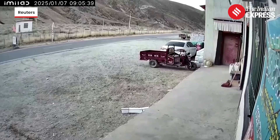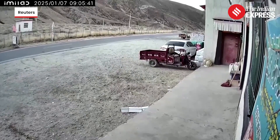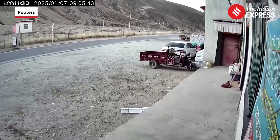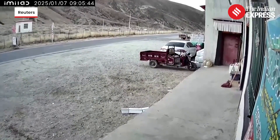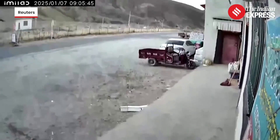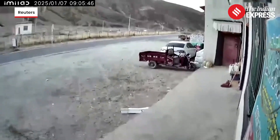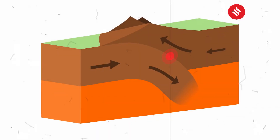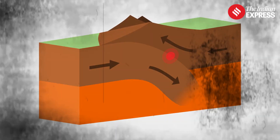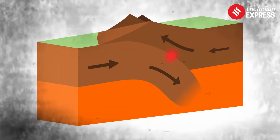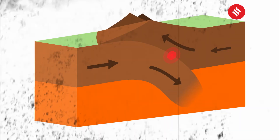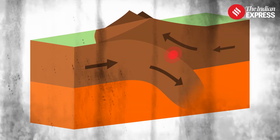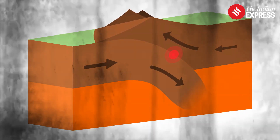An earthquake is a sudden shaking or vibration of the Earth's surface caused by the release of energy within the Earth's crust. This release of energy generates seismic waves, which are the vibrations that travel through the ground and cause the shaking we feel during an earthquake.